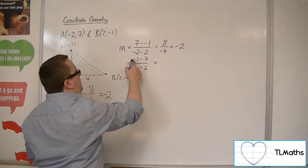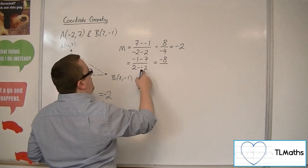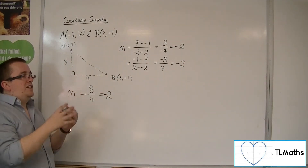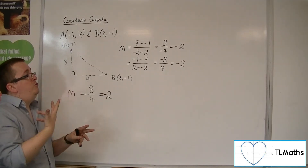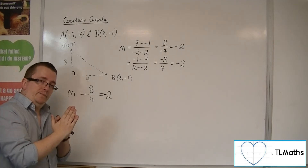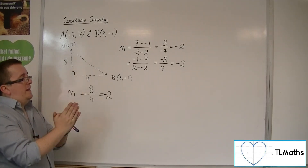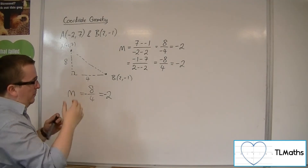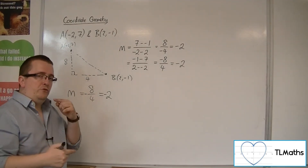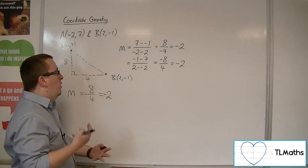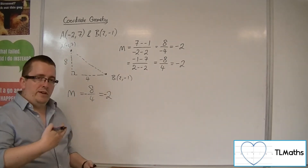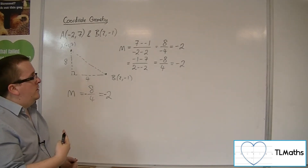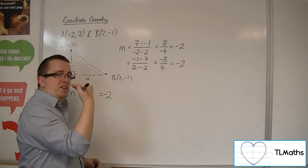We could also have done this the other way round: -1 take away 7 is -8, and 2 take away -2 is 4, so -8 divided by 4 is also -2. It doesn't matter which way round you do it, just so long as you do it consistently. To remember which goes on top, always think of it as dy by dx — difference in y divided by difference in x — because when you go into calculus and differentiation, you use dy/dx a lot, and it reminds you that difference in y is at the top and difference in x is at the bottom.